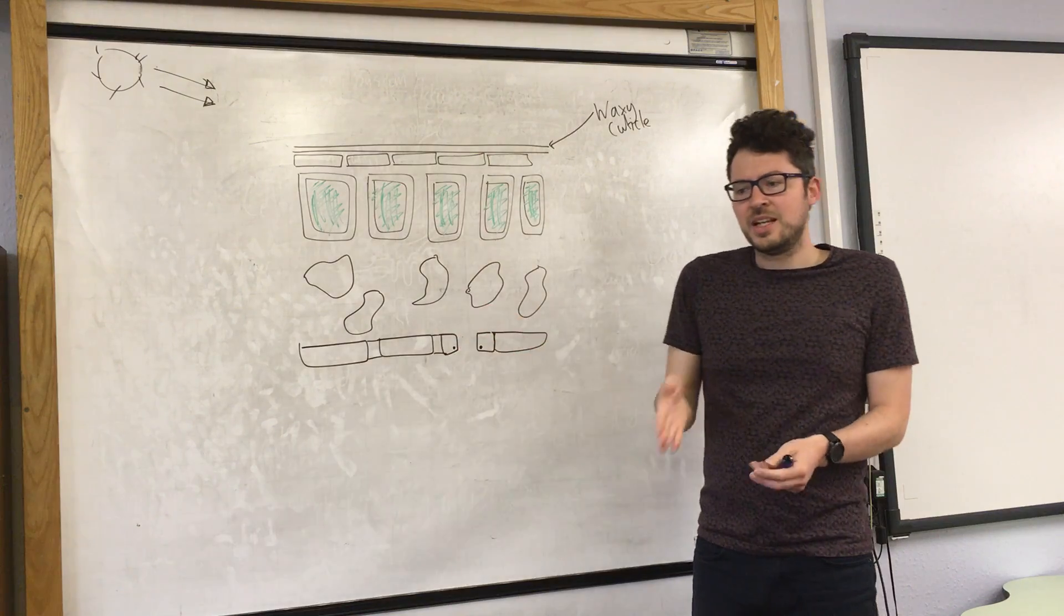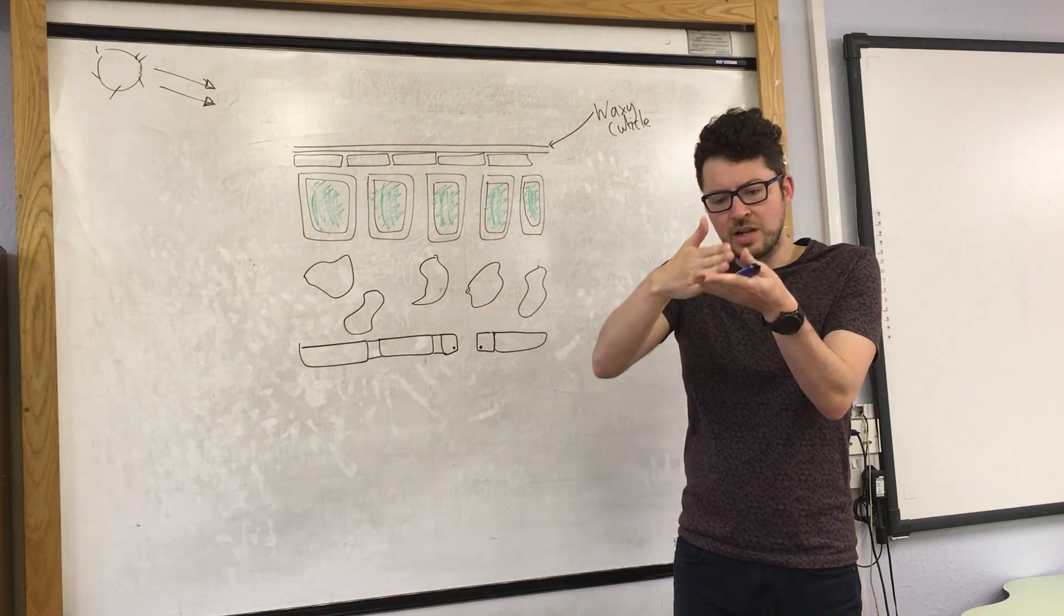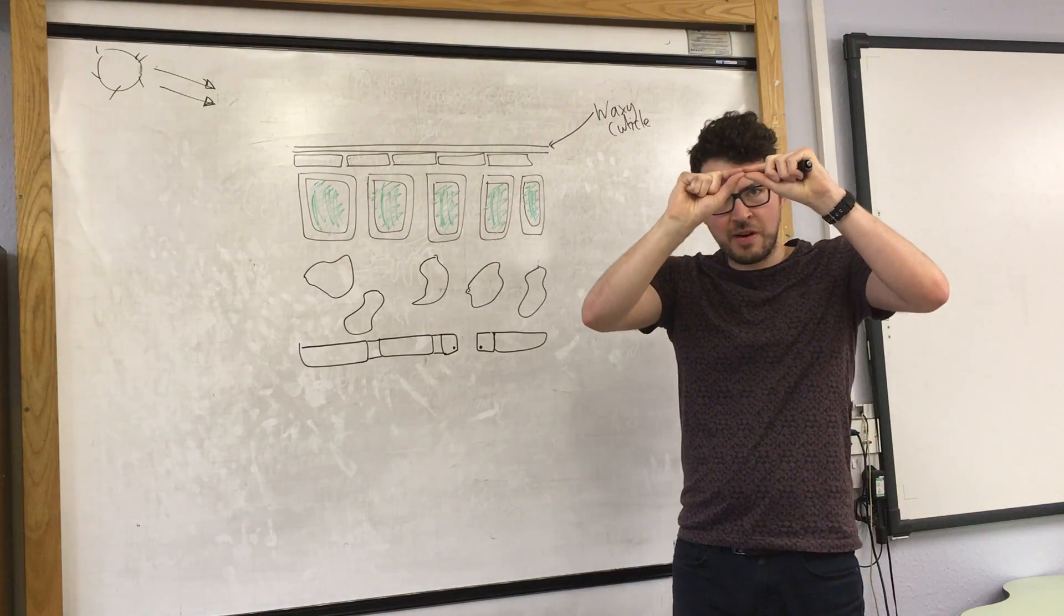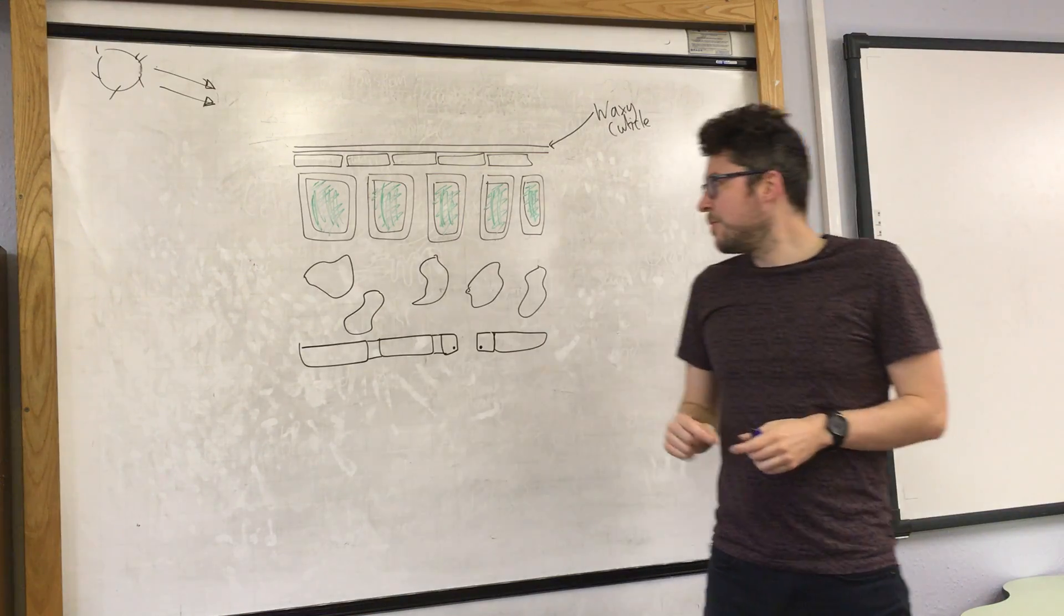Just so you know, this is the leaf cross-section. Imagine we've cut through the leaf and we're looking at it through the very thin section of the leaf.